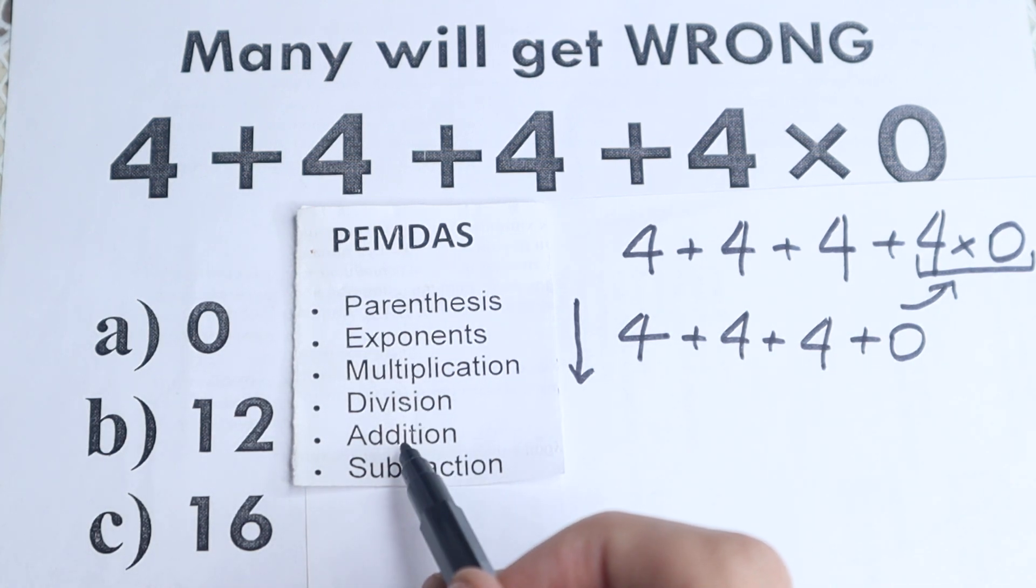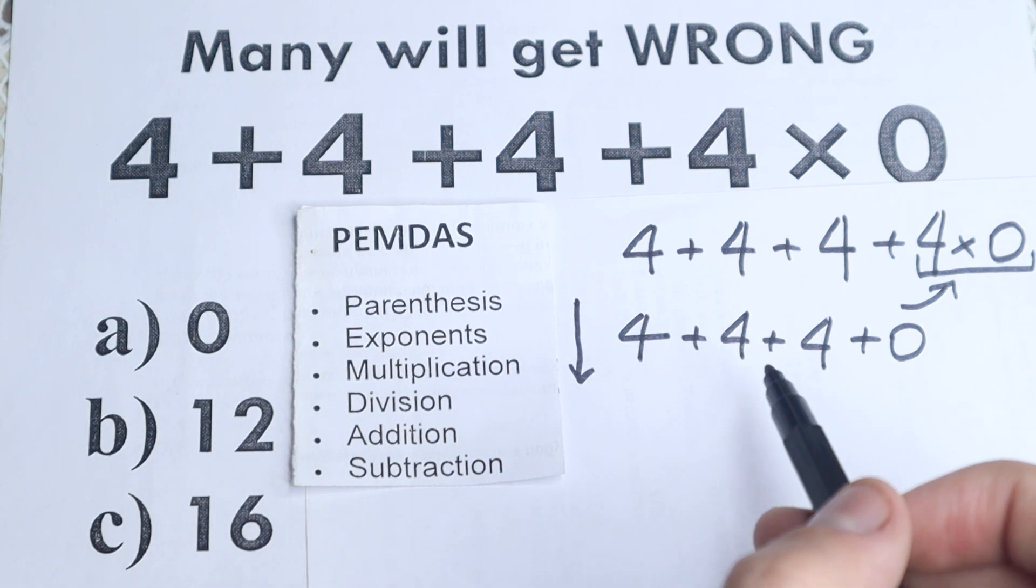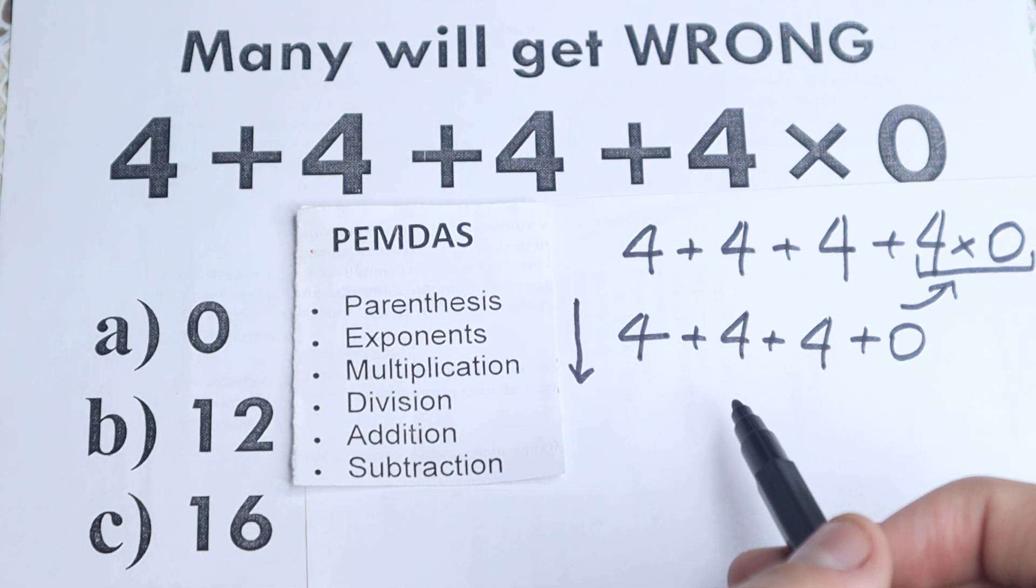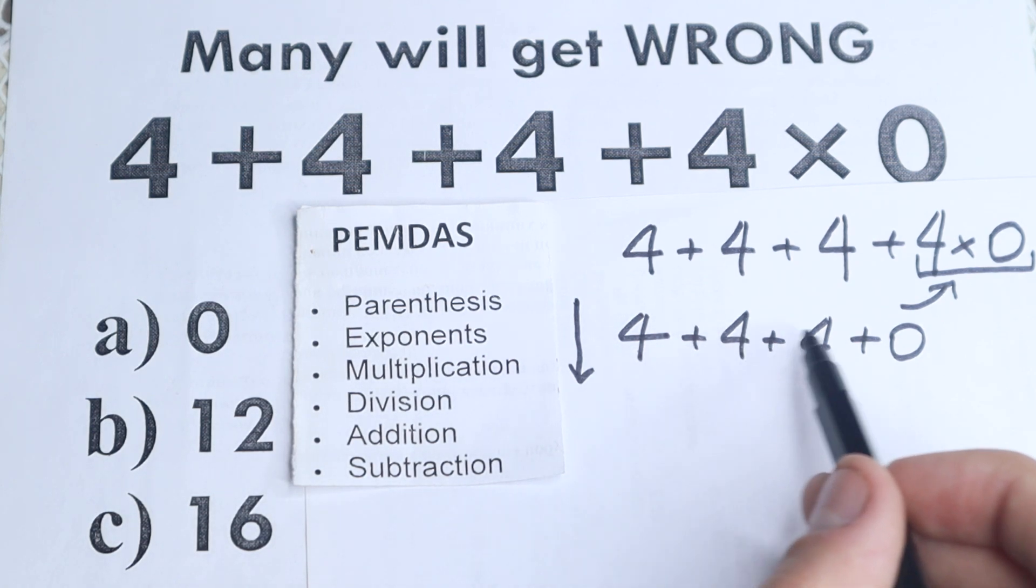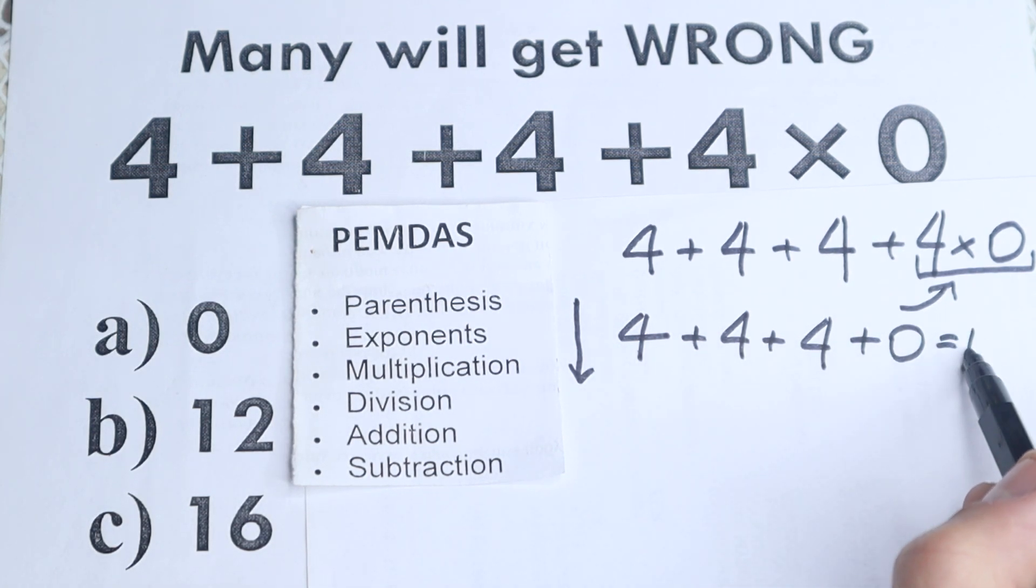Okay, we don't have division. Then the next step, addition and subtraction. We have addition, so this is our classic case. We all learned this stuff in the third grade. This is classic addition right here. So 4 plus 4 plus 4 equals 12. So this is our answer according to PEMDAS.